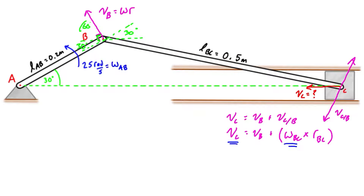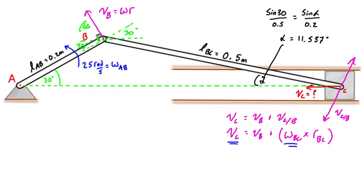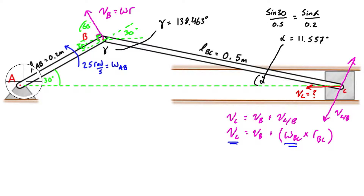To solve the problem, we first find all angles of the inner triangle. Calling the angle at C alpha, we apply the sine rule: sin(30°)/0.5 = sin(α)/0.2, giving α = 11.537 degrees. Then calling the angle at B gamma: 180° − 30° − 11.537° = gamma = 138.463 degrees. Now for V_B, with ω_AB = 25 rad/s and r = 0.2 m, we can solve this as a scalar equation.